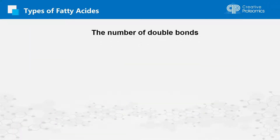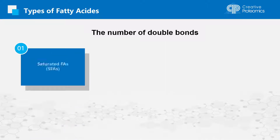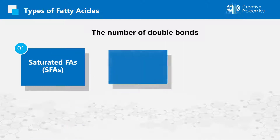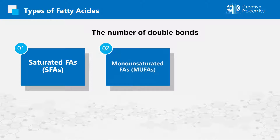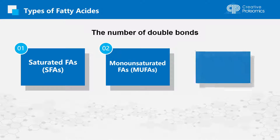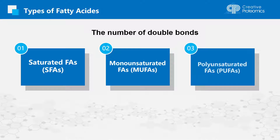In addition, according to the number of double bonds, fatty acids are classified into saturated fatty acids, monounsaturated fatty acids, and polyunsaturated fatty acids.